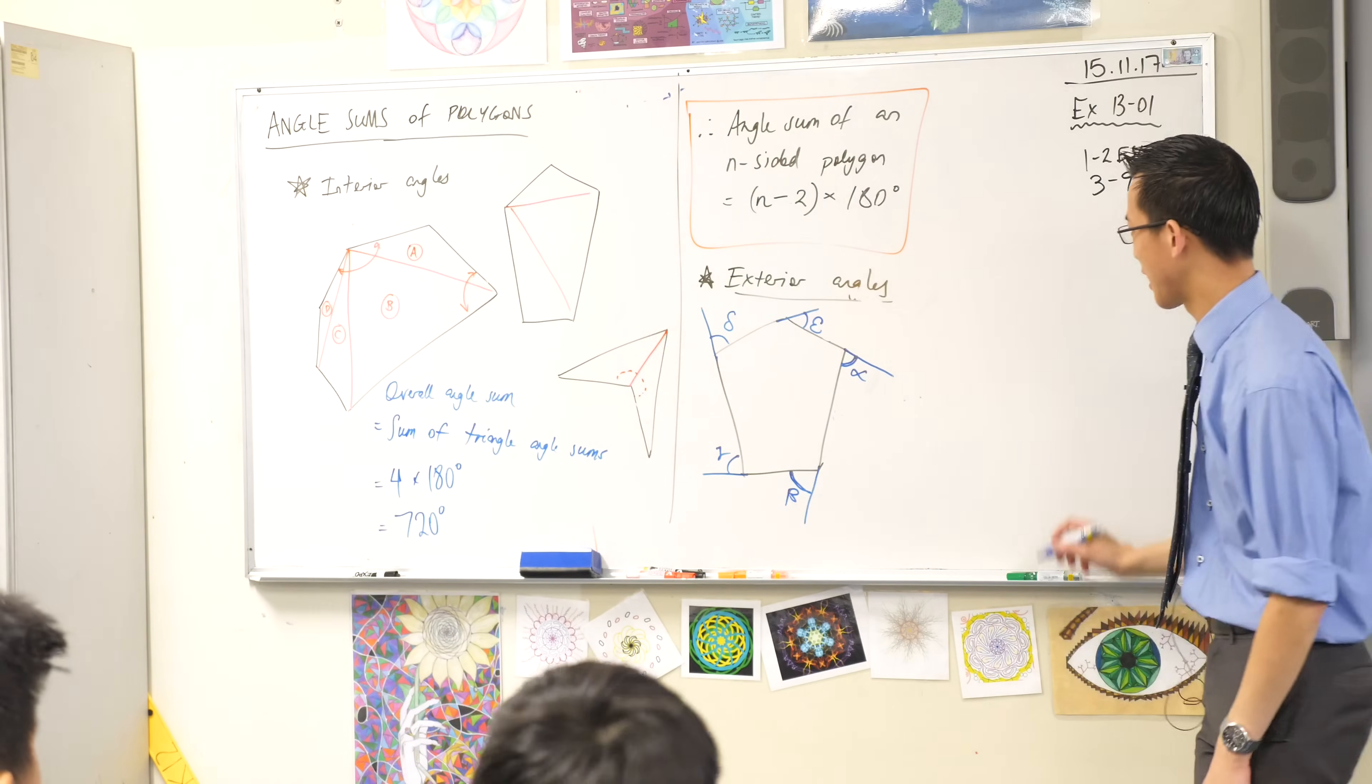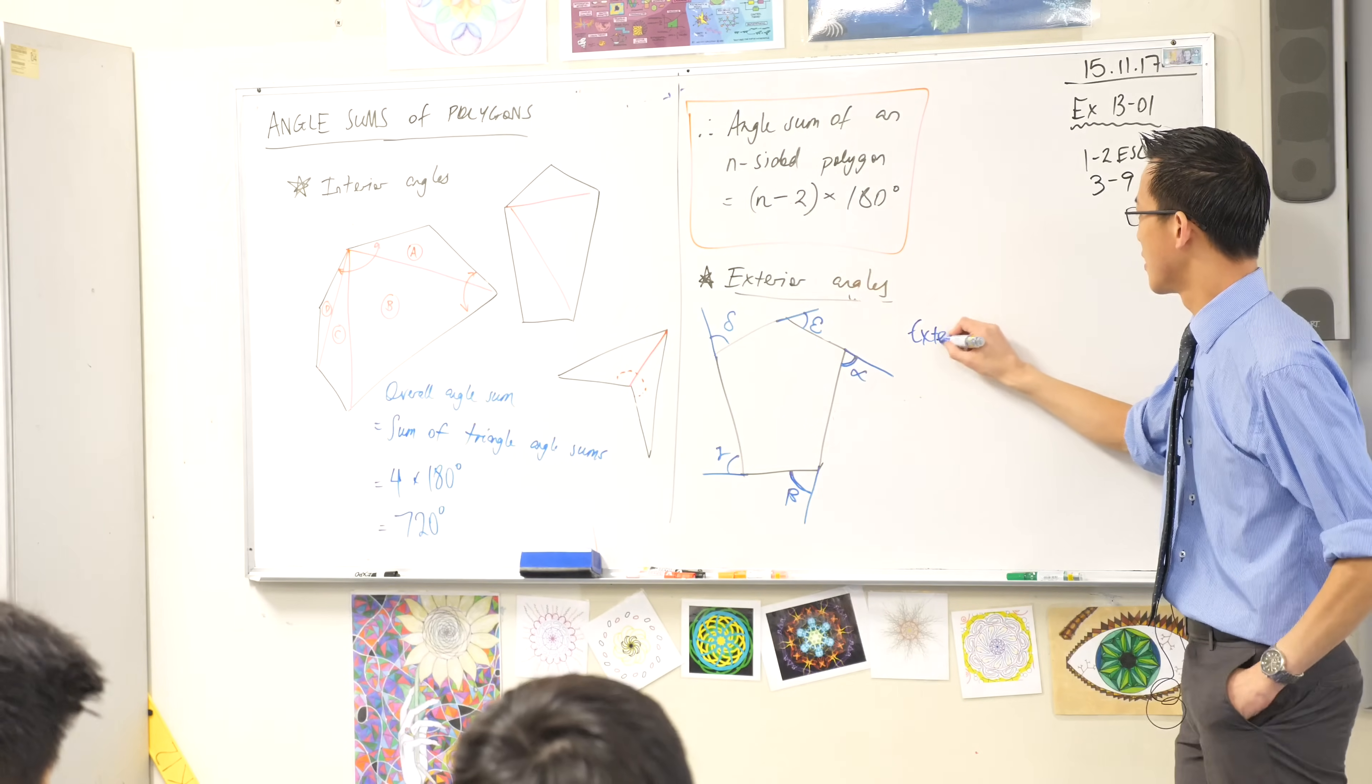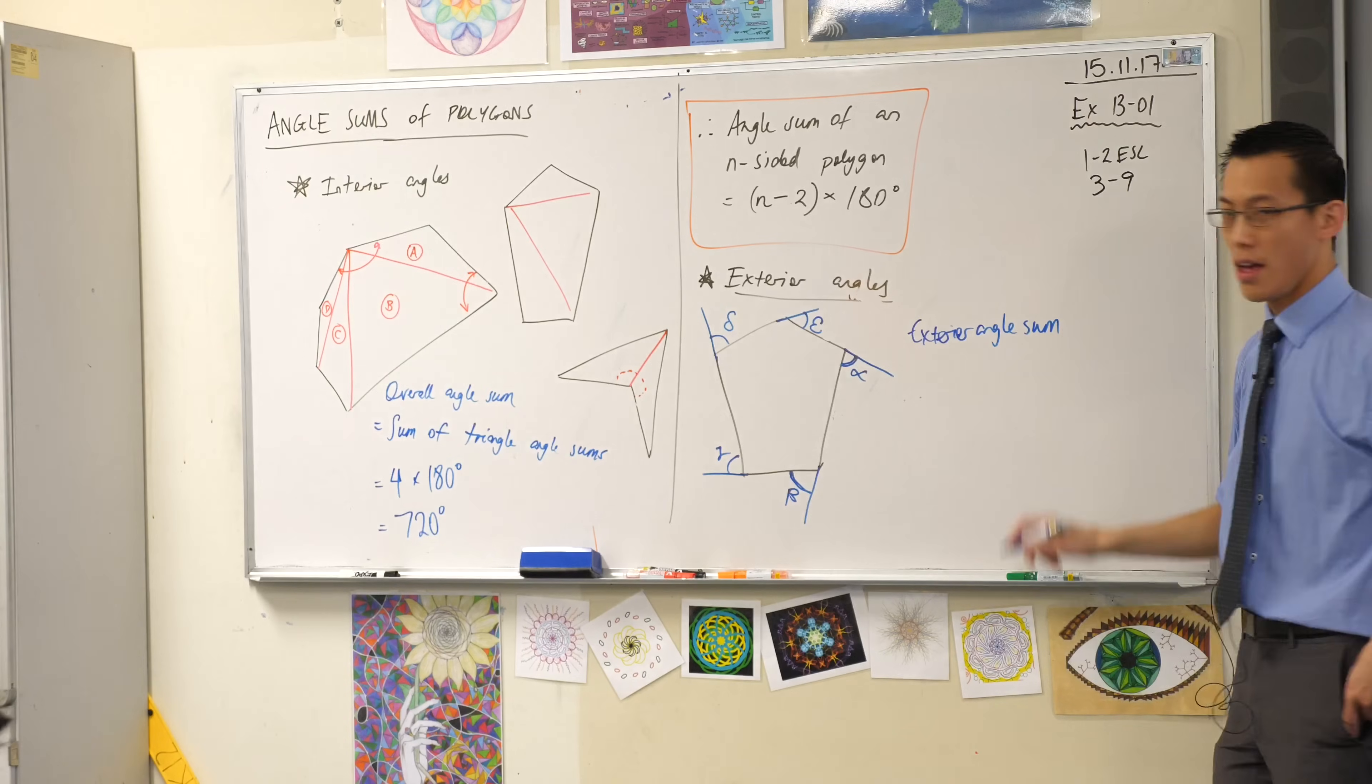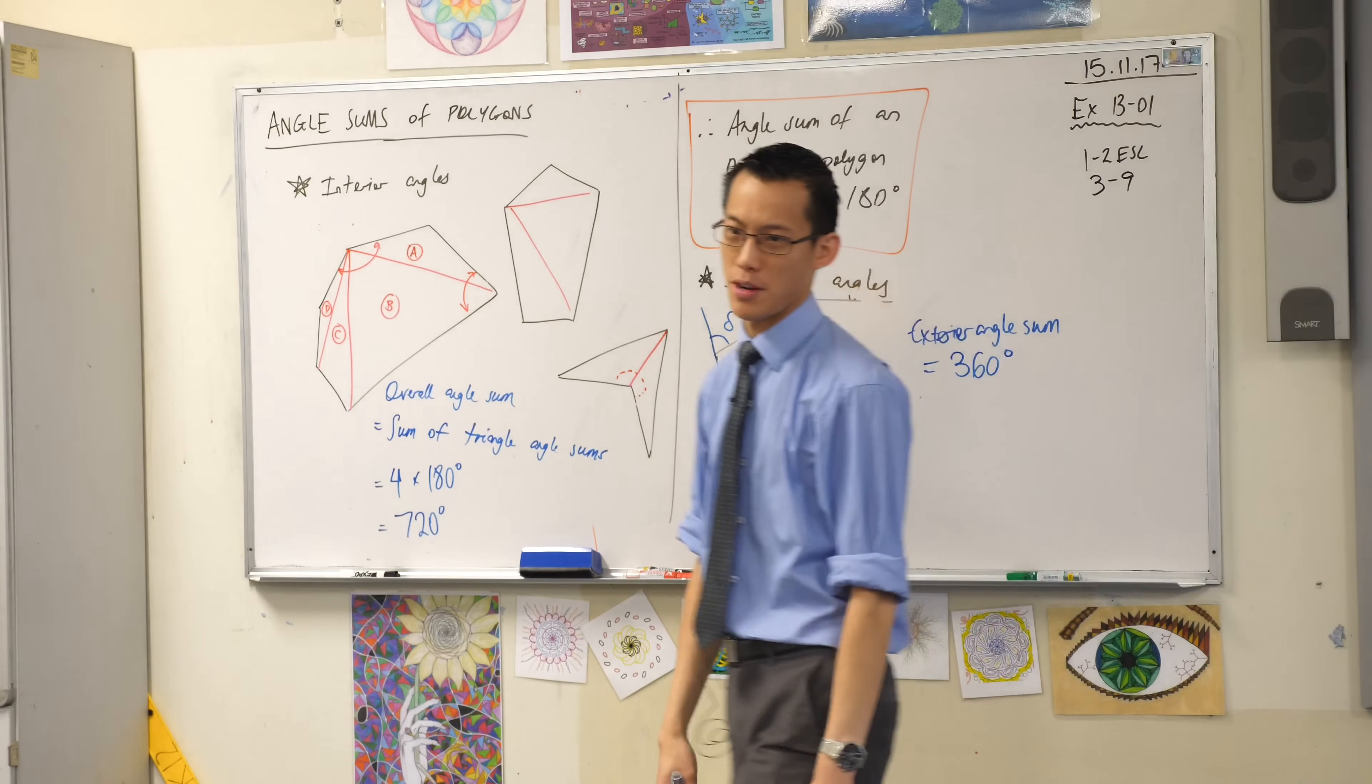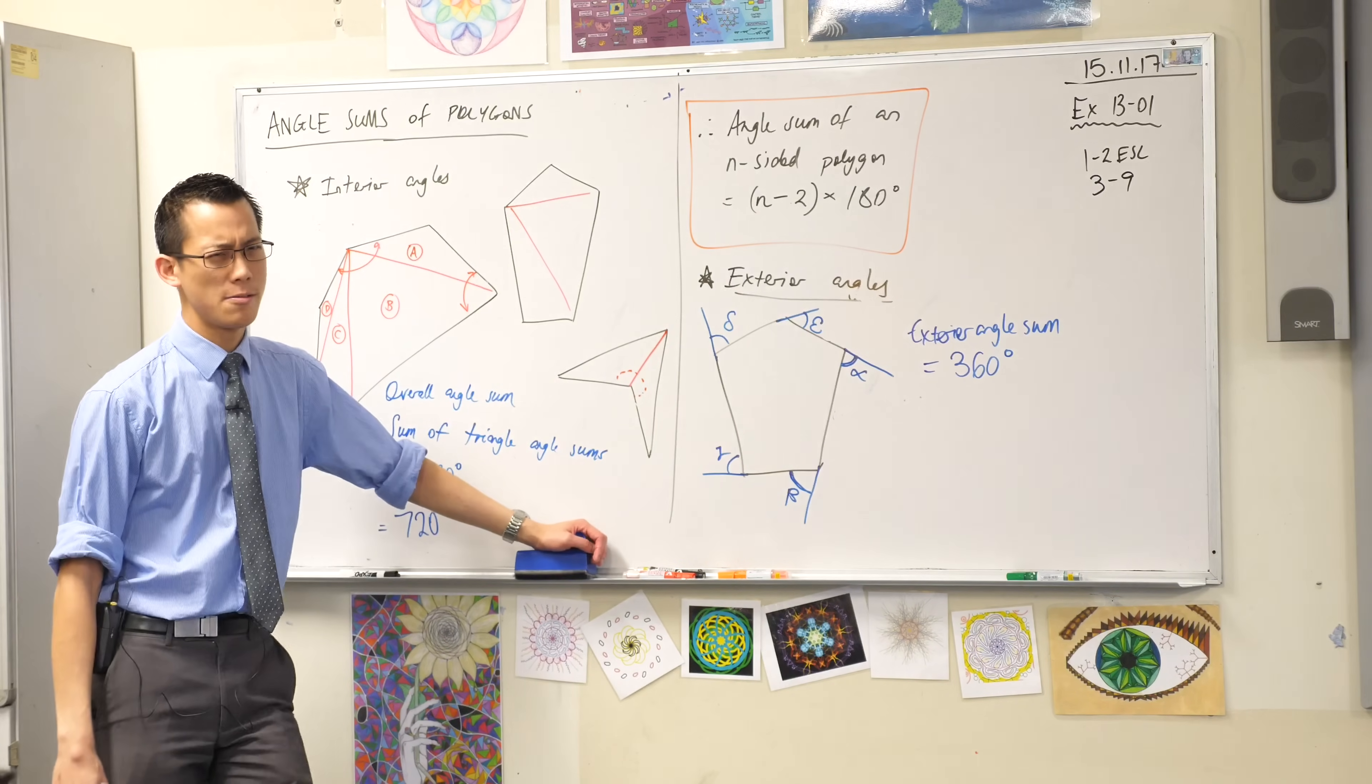But the weird thing with this is, you can write this down now. The exterior angle sum, the exterior angle sum of every polygon ever, everywhere, is always, every time, the same number. It's always 360.